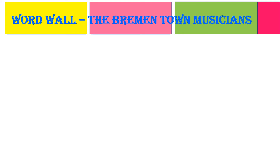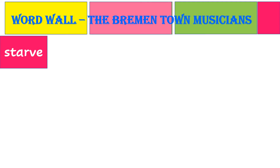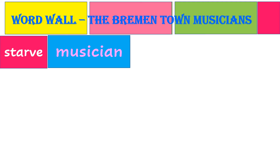Let us now have a look at the word wall — the new words that we have learnt in this lesson, the Brementown Musicians. Starve means to go without food; to go hungry is starving. Musician — somebody who works in music, or one who plays a musical instrument or sings, is called a musician.